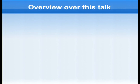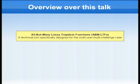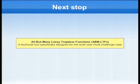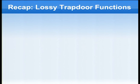So far the motivation for why we should look at the multi-challenge, multi-user setting directly and not deal with simplifications in certain cases. In this talk, I want to present a technical tool specifically designed to treat situations in which you have multiple challenges and multiple users, multiple public keys, and you want to tackle security proofs in this setting directly. This is called all-but-many lossy trapdoor functions. First, a recap of what a lossy trapdoor function is, and from this we will generalize.